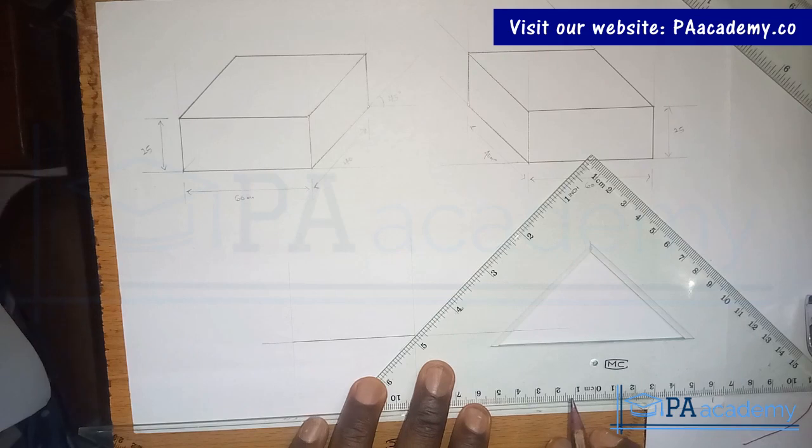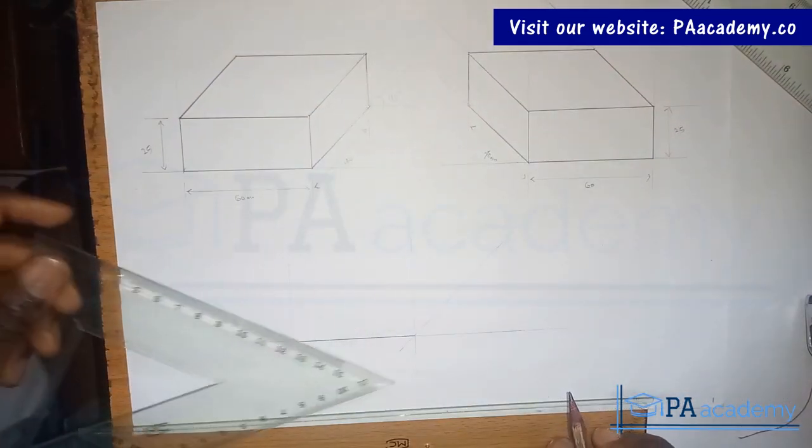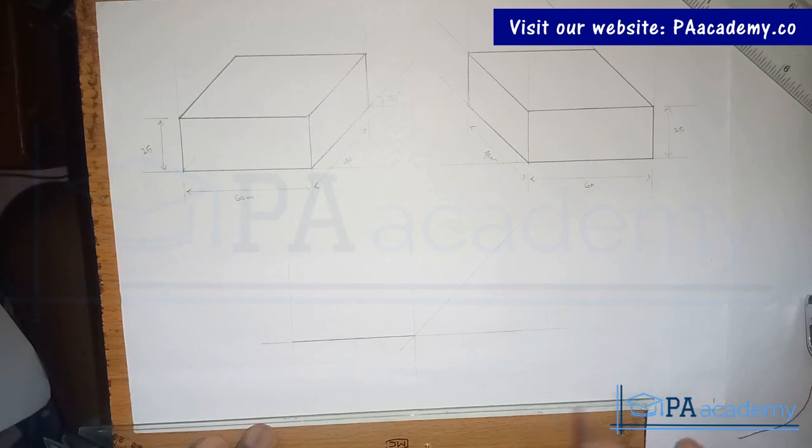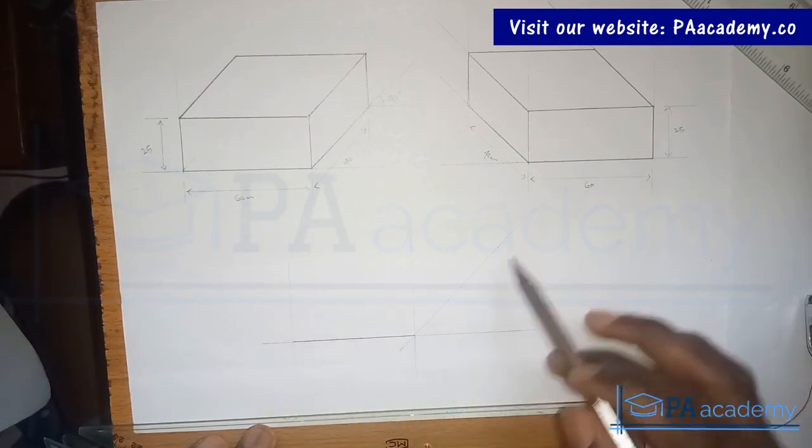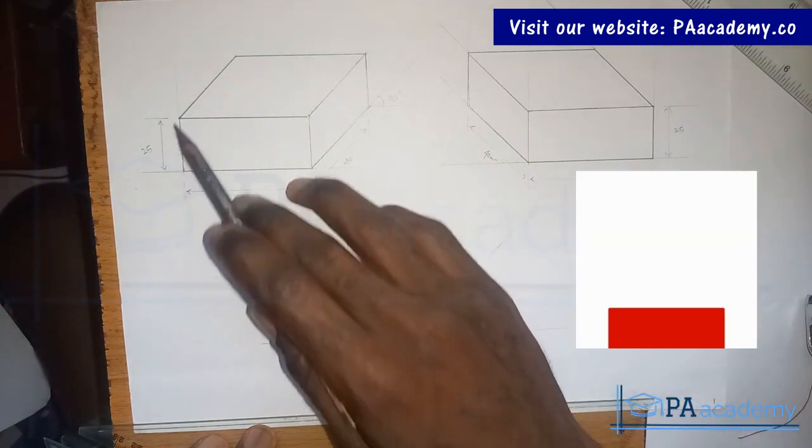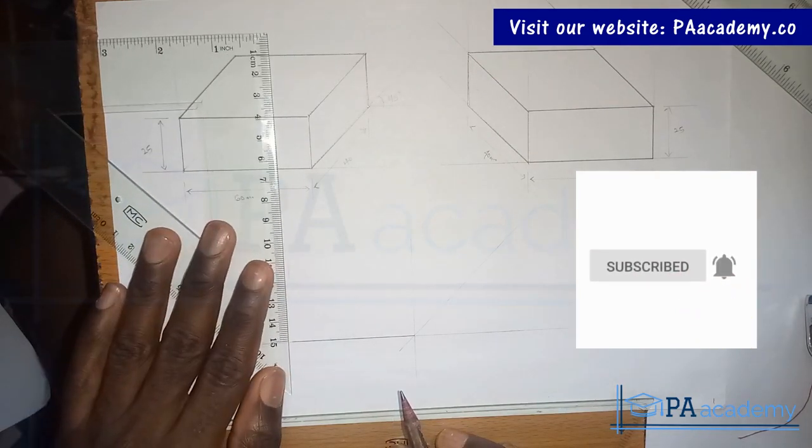So just make sure it is properly placed at that point. So I'll be using faint lines. You might not be able to see it clearly. I hope you can see it. So from those lines, let me just take the measurements. So the height here is 25 mm. And then the length from here to here is 40 mm. From here to here is 25 mm. 25 mm is same as 2.5 cm. So let me just measure it.